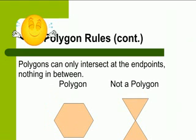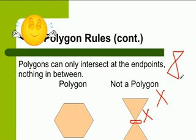The other thing is that it cannot intersect. As you can see right here, this shape intersects. So this is not a polygon. It cannot cross. Shapes cannot keep going.